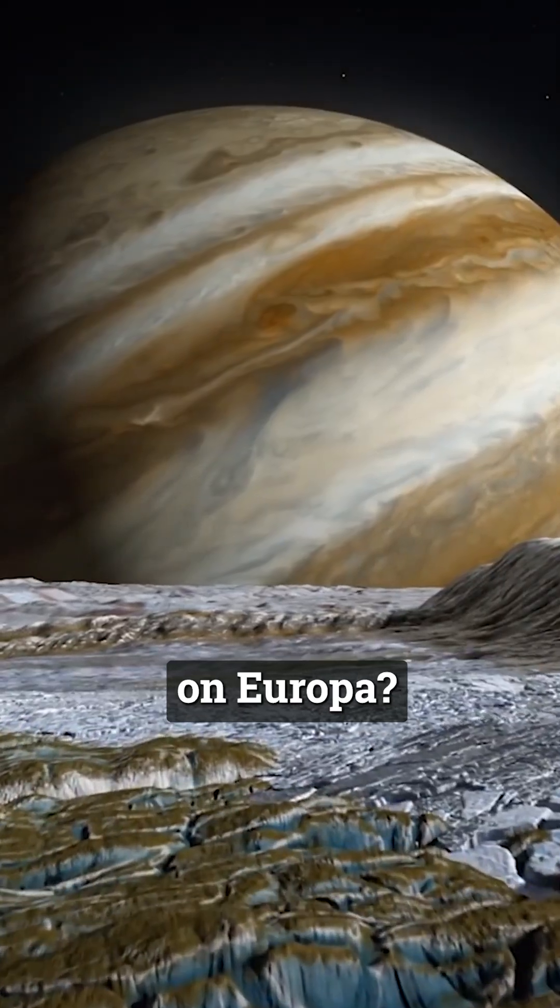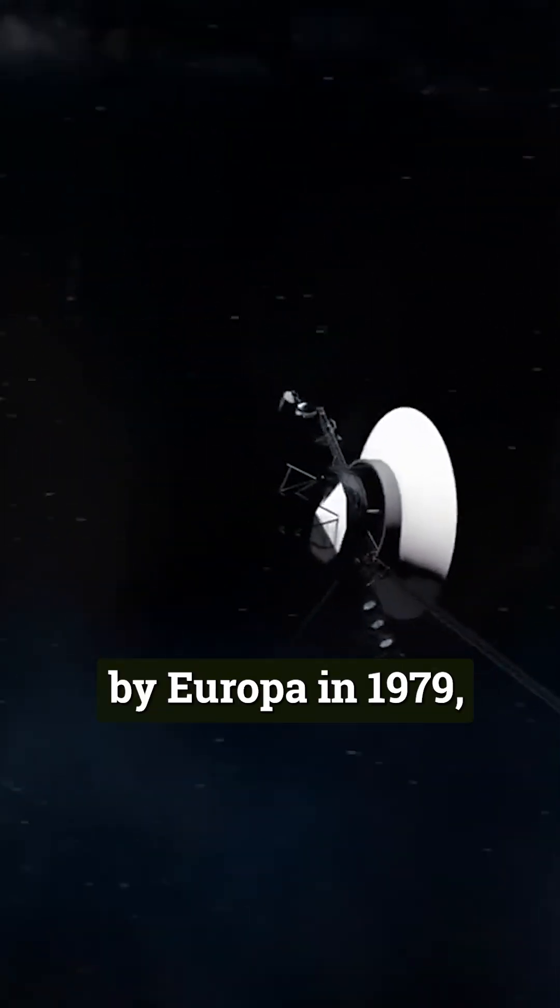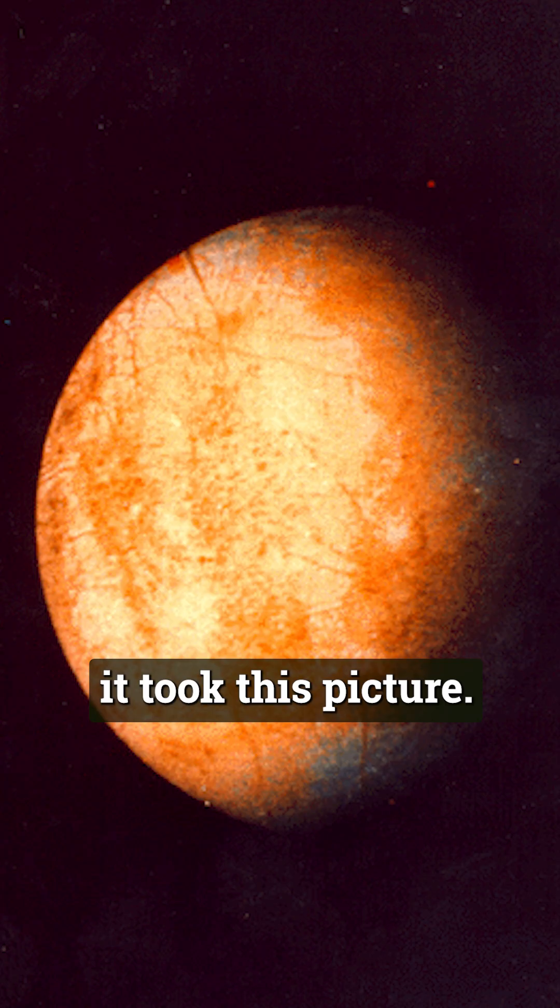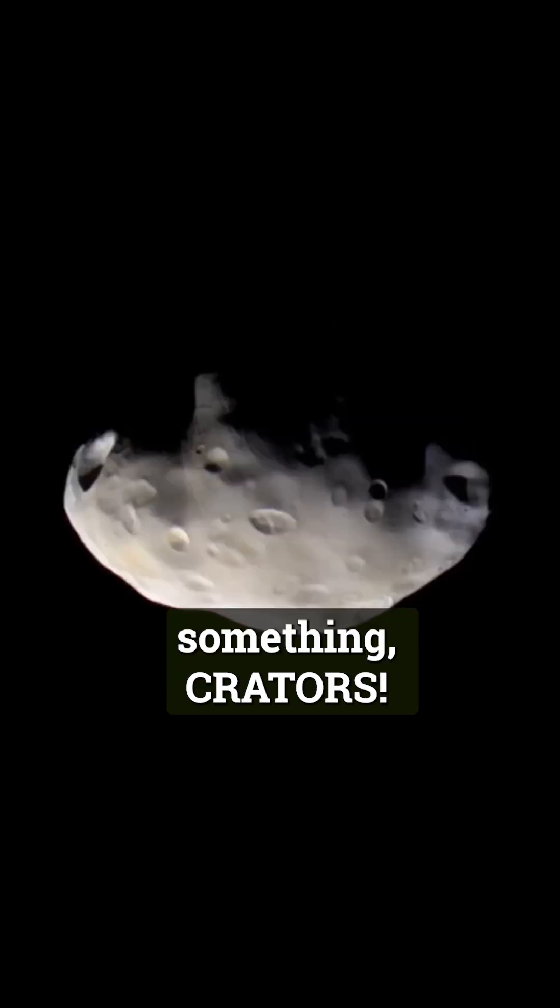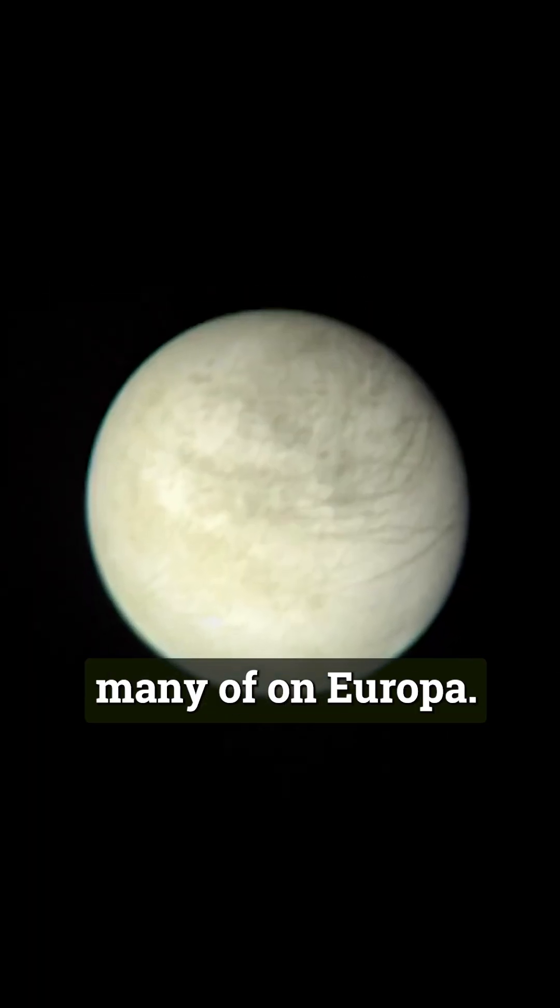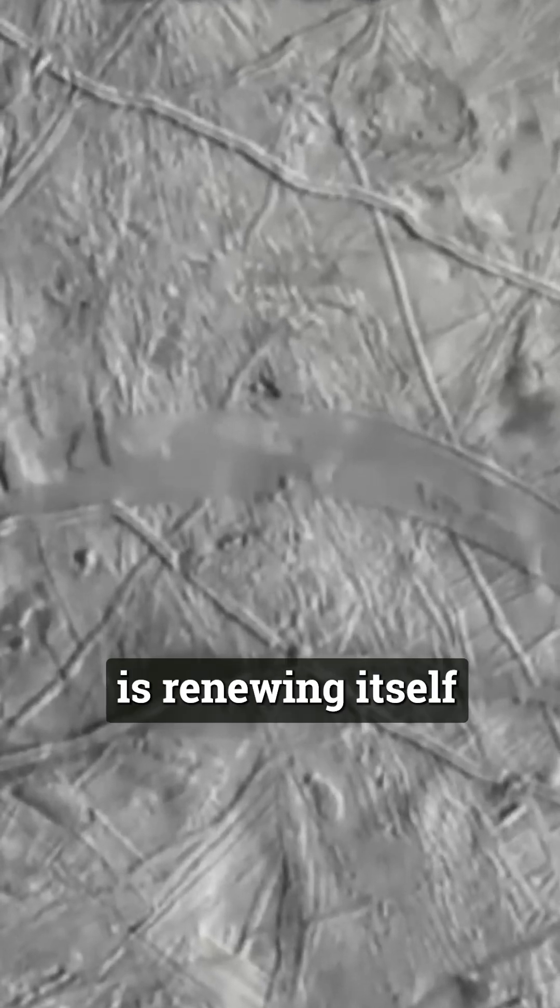But why do we think there's life on Europa? When Voyager 1 passed by Europa in 1979, it took this picture. And if you look at other moons in the solar system, you'll notice something. Craters, which you don't see many of on Europa. It's as if the surface is renewing itself.